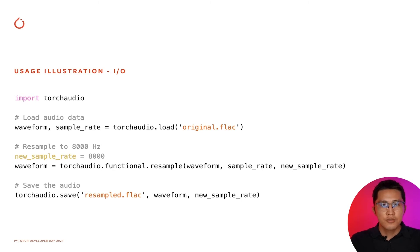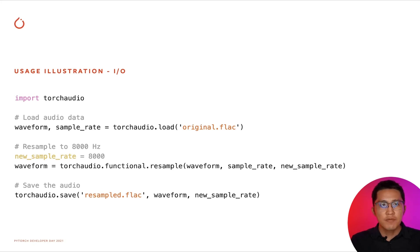To load audio into a tensor, you can use torchaudio.load. To change the sampling rate, you can use torchaudio.functional.resample. This function also supports GPU. To save a tensor into audio format, you can use torchaudio.save.